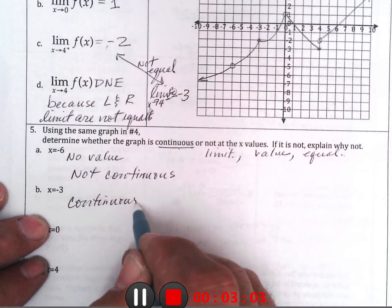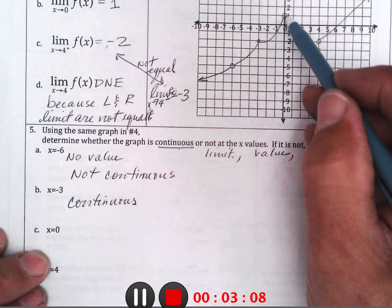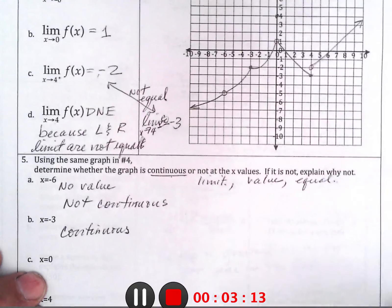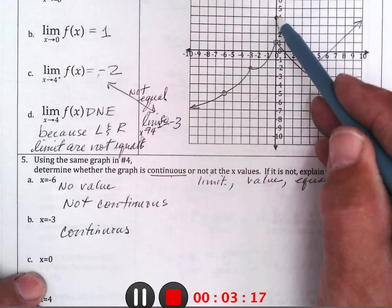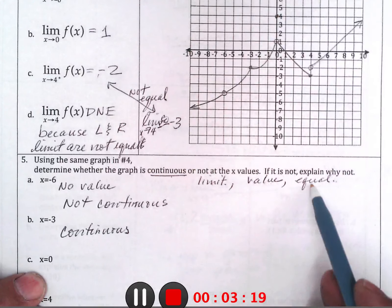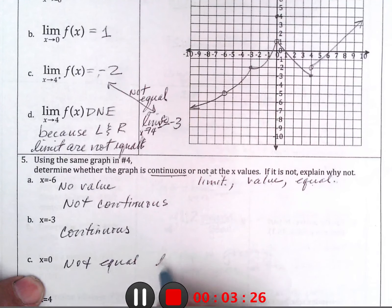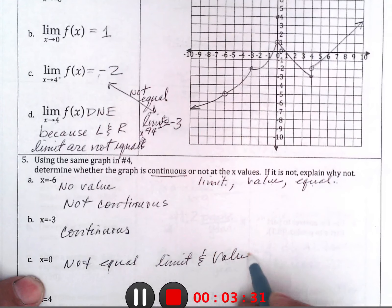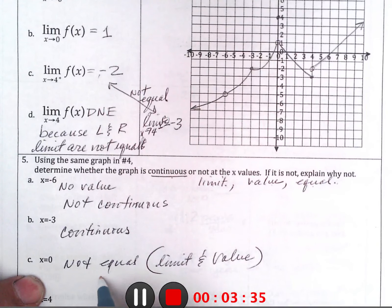At x equals 0, it has a limit, the limit is 1, has a value, the value is up here at 4, so it has a limit, has a value, but they're not equal. So, not equal are the limit and value, so it's not continuous.